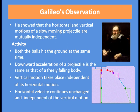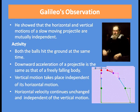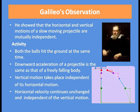In the second case, when we are throwing a ball in the horizontal direction, it is covering some horizontal distance. But the vertical motion takes place independent of its horizontal motion. The horizontal velocity continues unchanged and independent of the vertical motion.